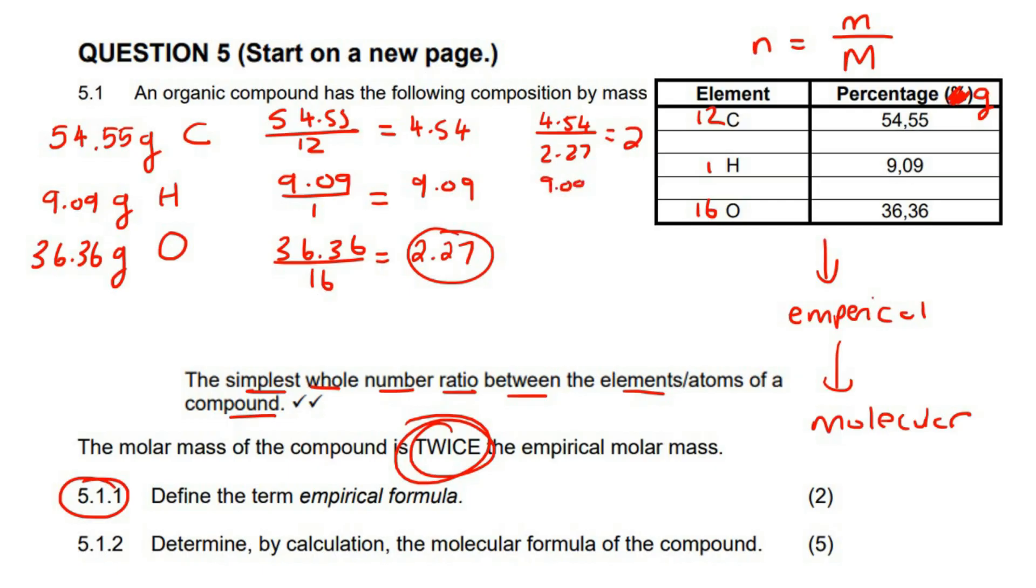Then you're going to say 9.09 divided by 2.27, which is pretty much 4, and then you're going to say 2.27 divided by 2.27, and that is 1, and there are your answers.